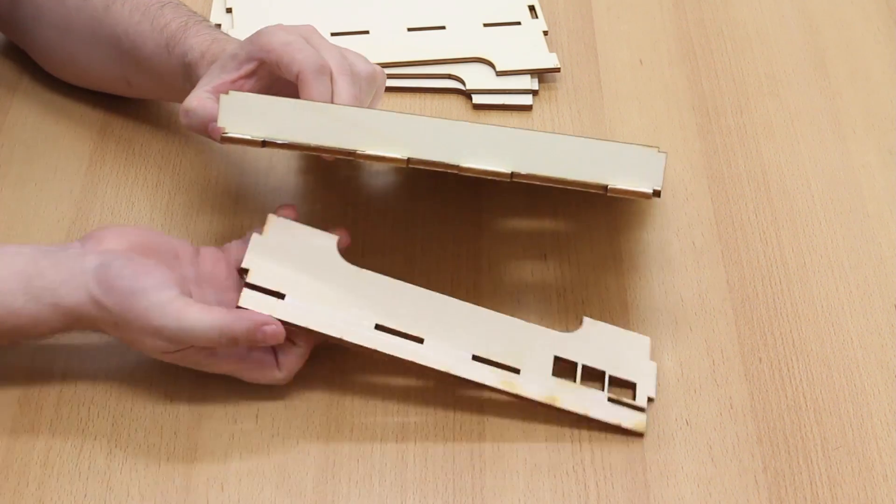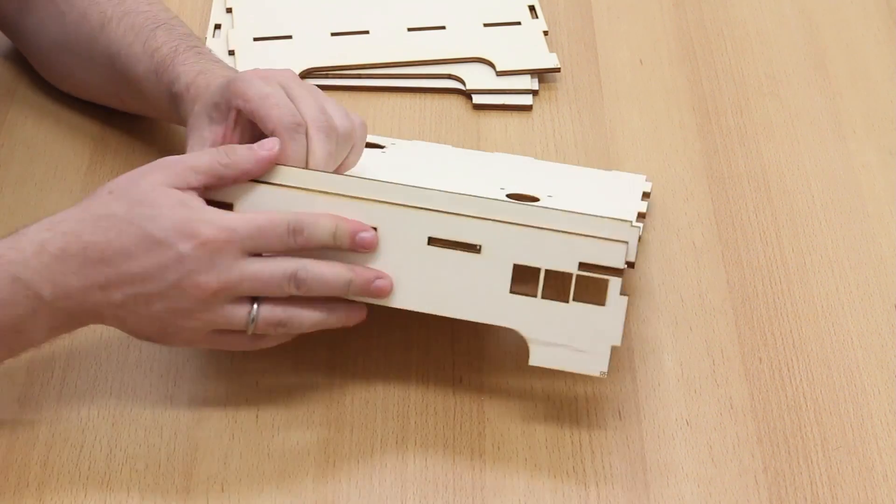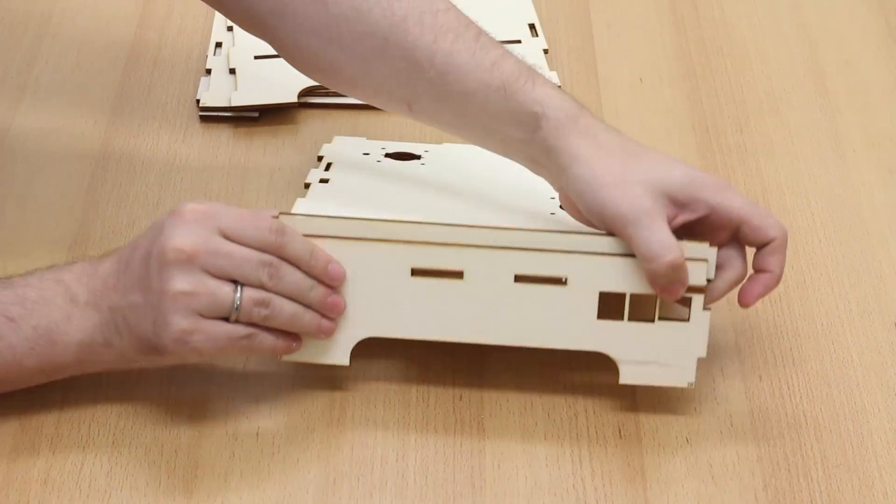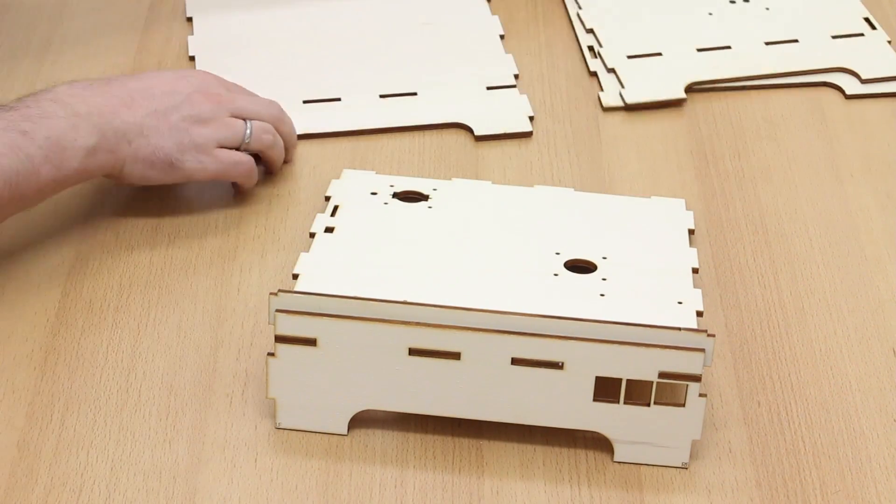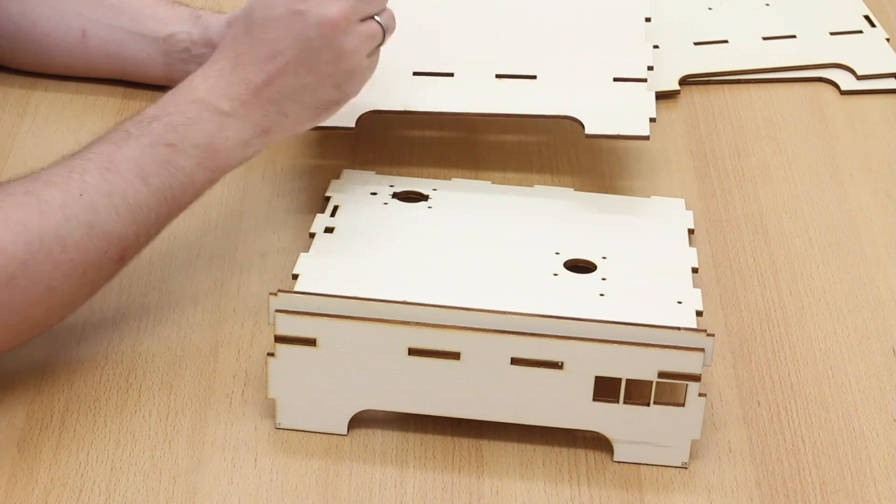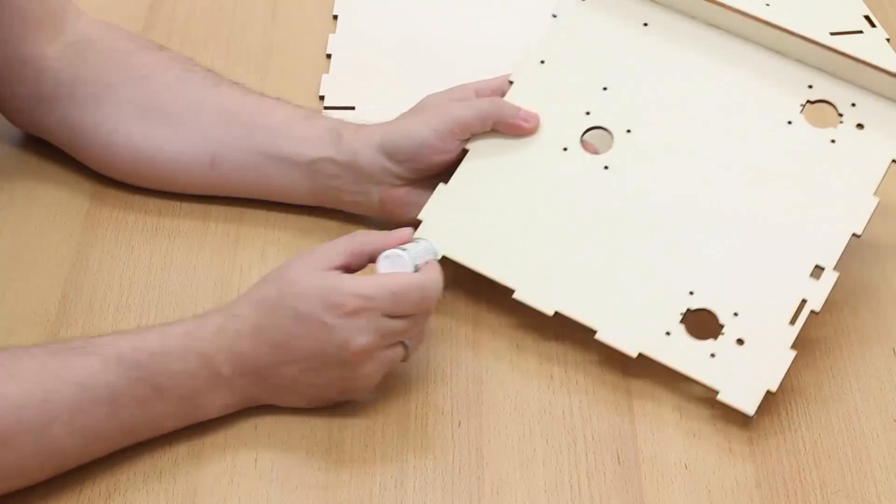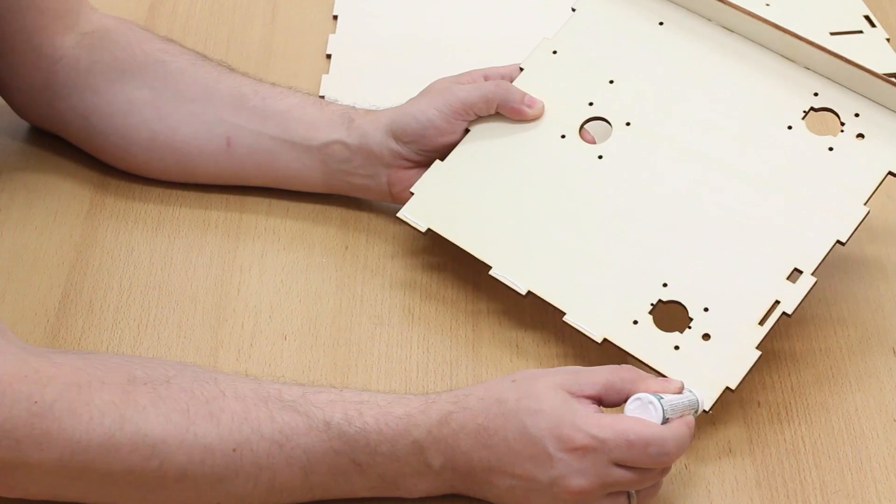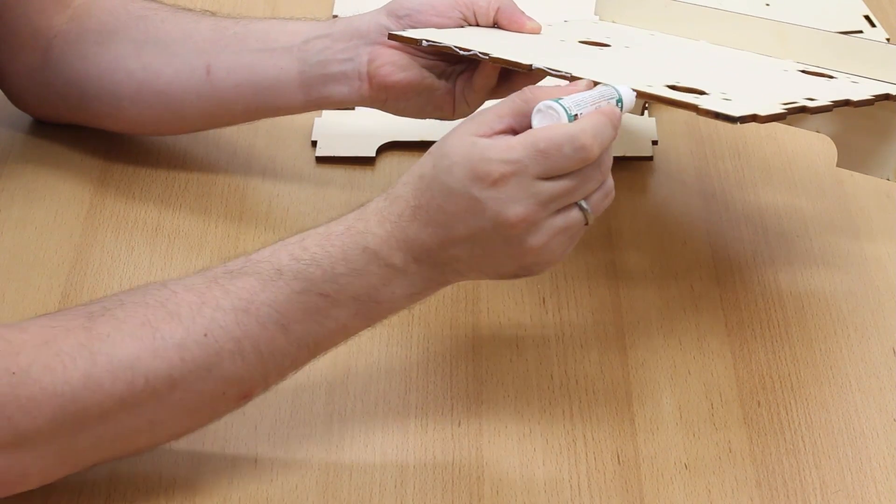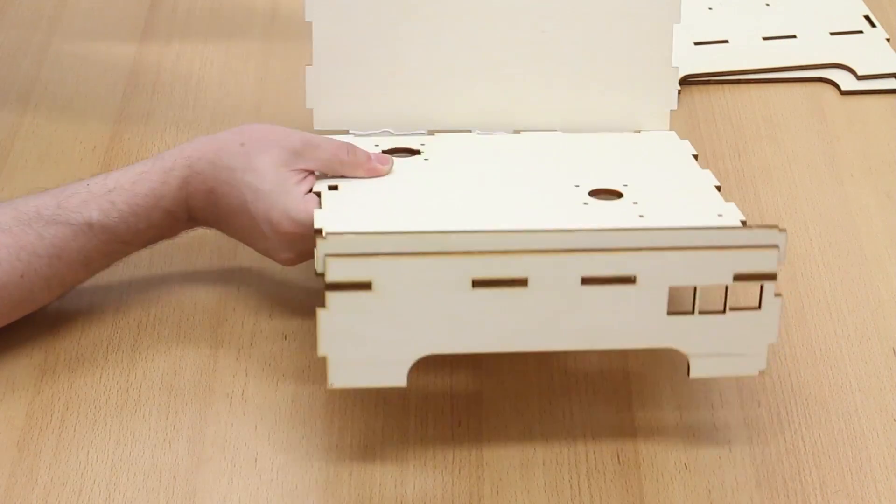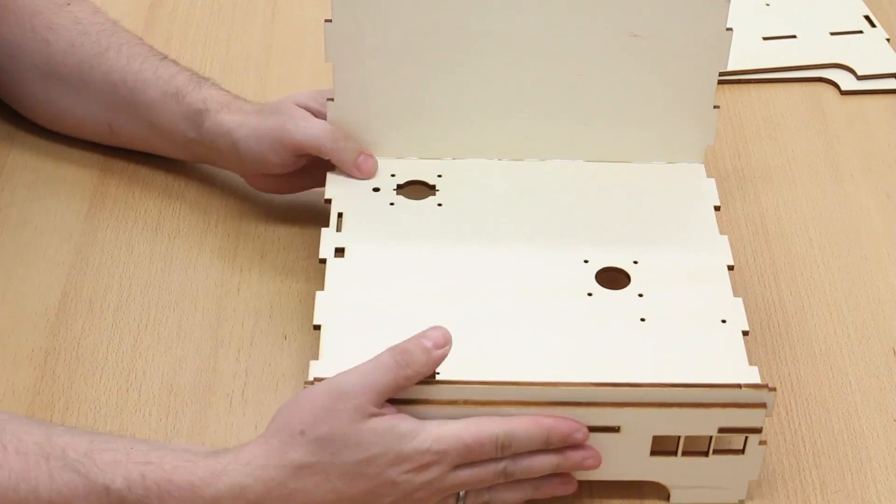And this creates a step that protects the lid. Now we grab the back of the housing. We apply glue to the base plate and to the back. And assemble it.